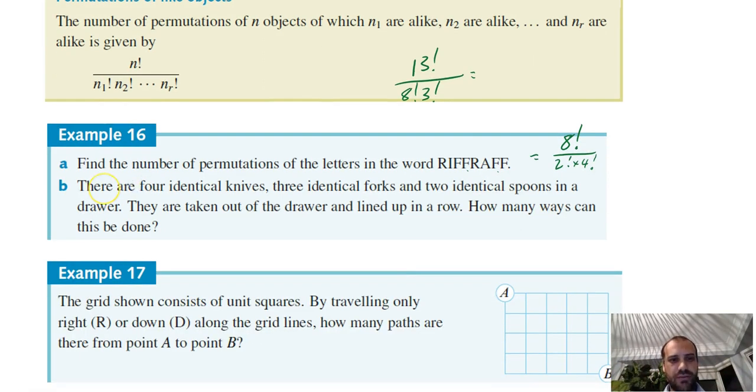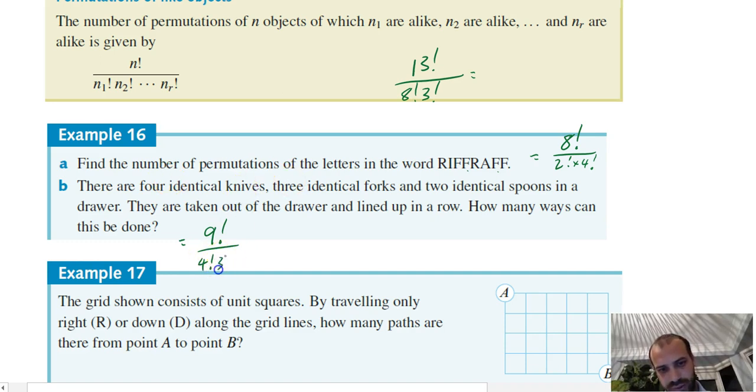Finally, there are 4 identical knives, 3 identical forks, and 2 identical spoons. So that's 4 plus 3 is 7 plus 2 is 9. How many ways can this be done? Alright, so 9 factorial over 4 factorial times 3 factorial times 2 factorial answer.